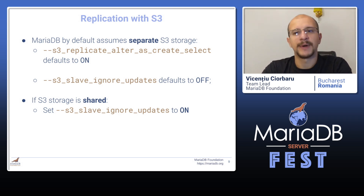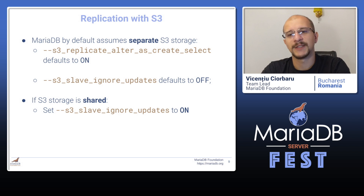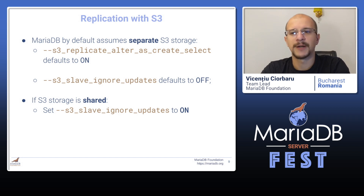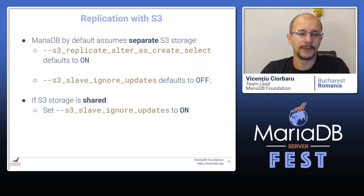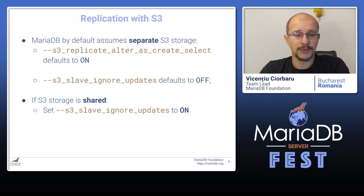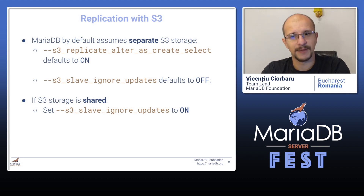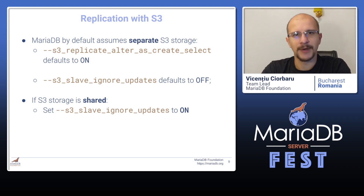You need to keep in mind that MariaDB is by default configured to assume separate storage, which means the switch 'replicate_alter_as_create_select' defaults to on. This means all the table rows are logged into the binary log, and then the slave will ignore any updates that happen to S3 tables. This is what you want when the storage is separate, but if it's shared, the S3 secondary server must make sure to ignore any updates to S3 tables because the updates are already there.